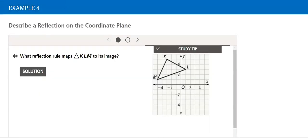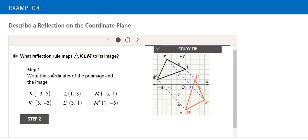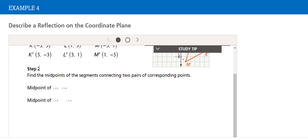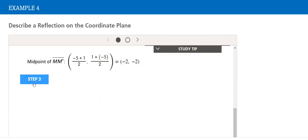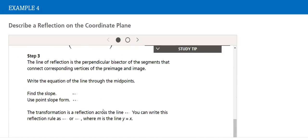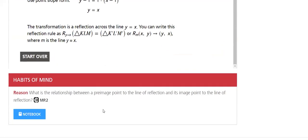Next, we have to describe a reflection across a coordinate plane. What reflection will map triangle KLM to its image? And then we do step one, step two. All the steps are here on Savas, and then you can figure out the rule.